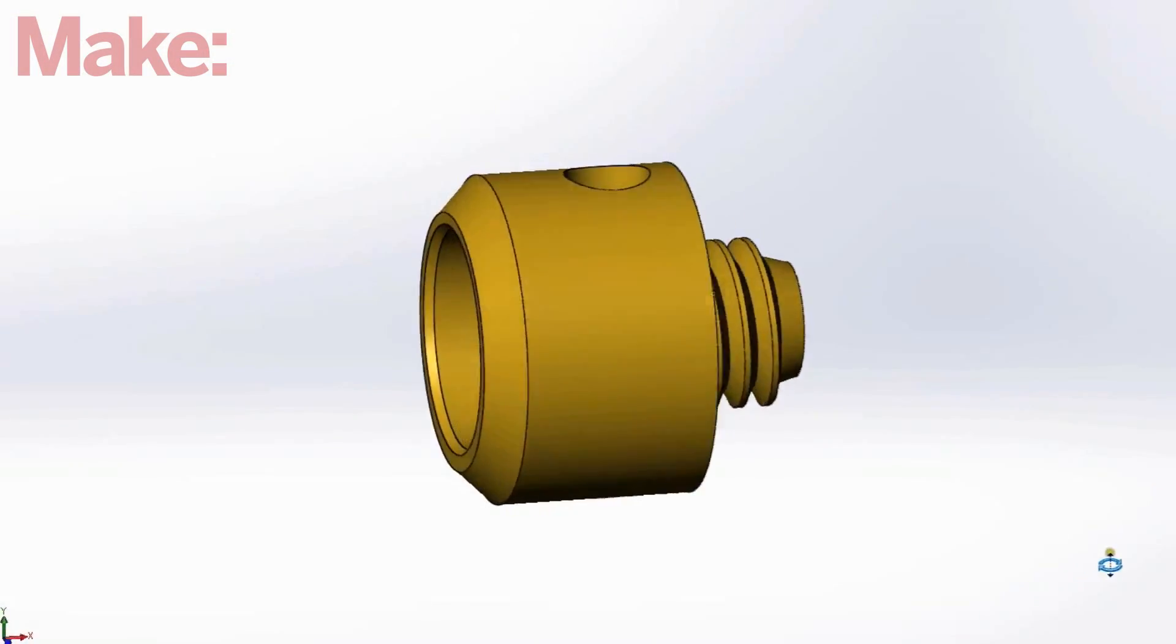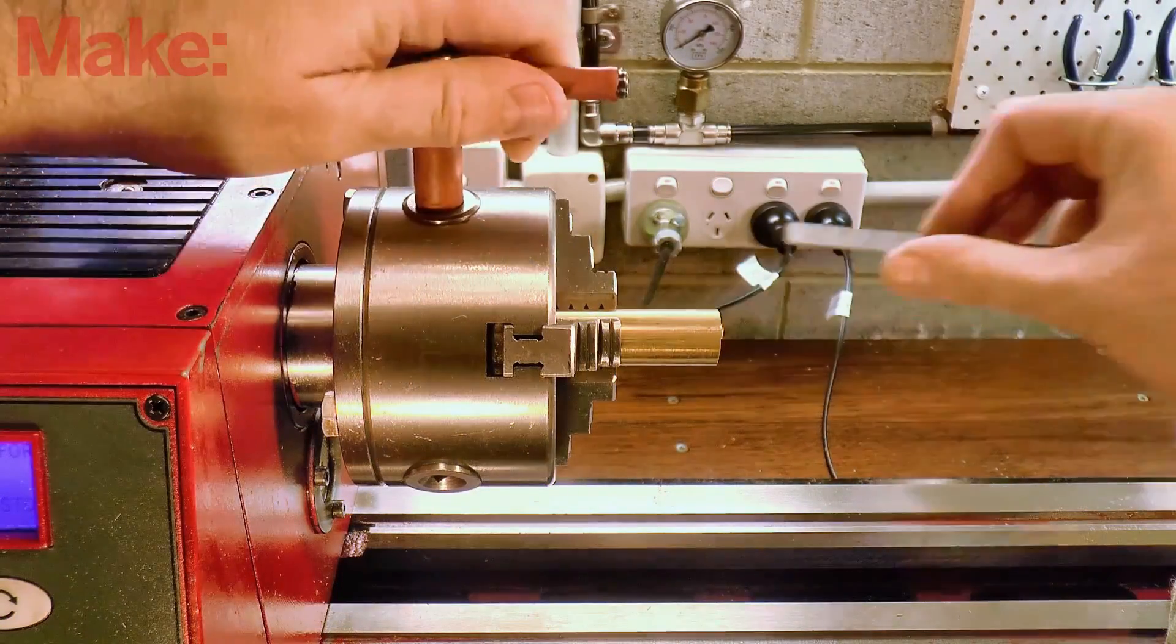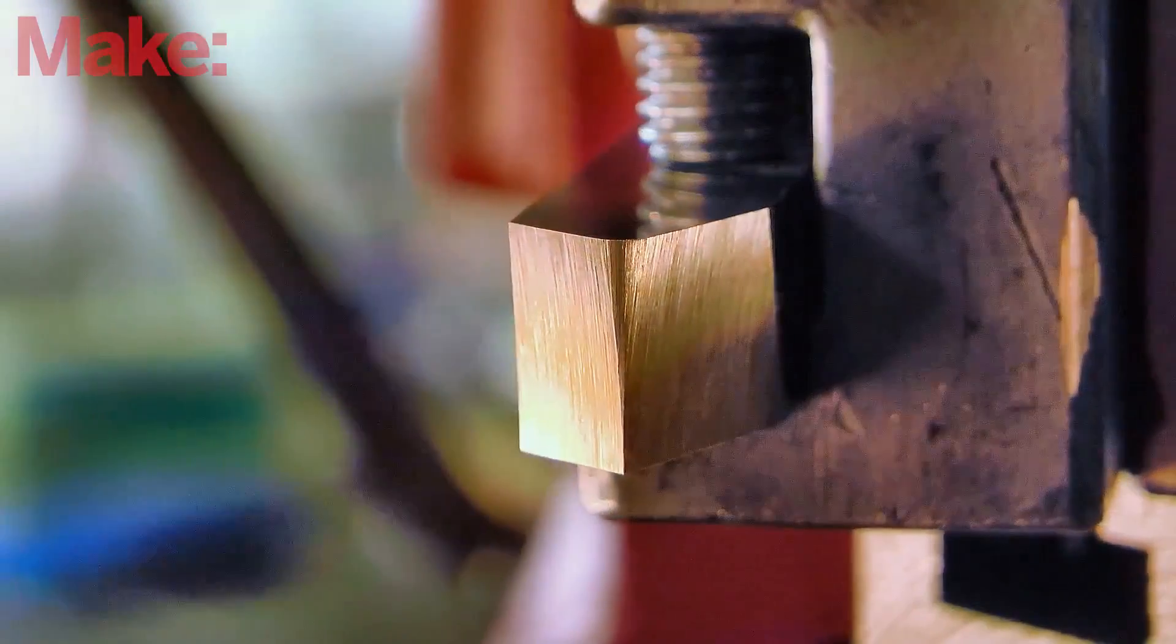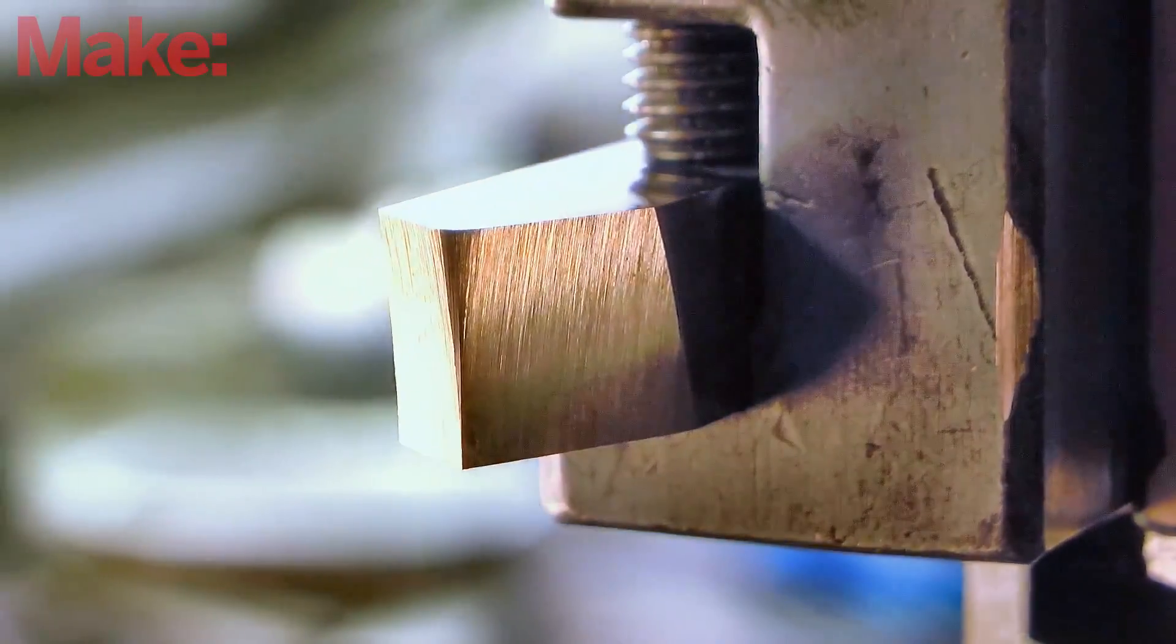Next up, let's turn the end cap from this section of brass rod. Usually I prefer to form an undercut at the base of a thread like this, but in this case we'd like a small fillet to help with the o-ring seal, so I'm using a lathe tool with a slight radius on the tip to do the turning.